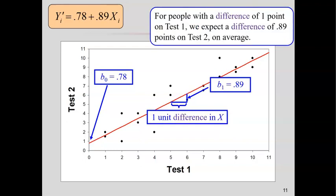And instead talk about people with a difference of one point on the predictor variable. So here, this comparison isn't if we took these people and moved them up. Instead, it's we've got two groups of people. They differ by one point on x. What do we expect their difference to be on y?